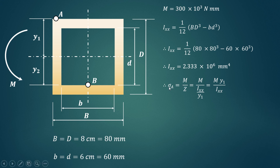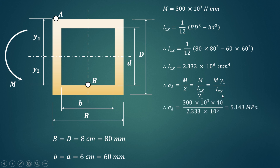The bending stress is given by M divided by section modulus Z, where Z equals Ixx divided by y. For point A, the distance of the extreme fiber from the XX axis is y1 equals D/2 equals 80/2 equals 40 mm. So the bending stress at point A, sigma_A, equals M·y1 divided by Ixx, which gives 5.143 MPa.